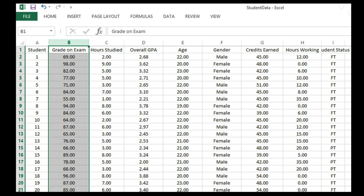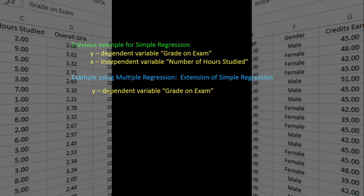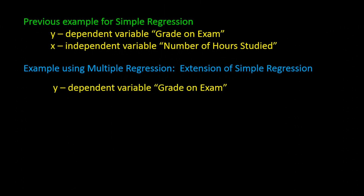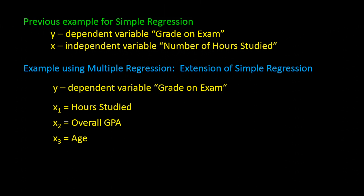I want to see if overall GPA and age are also related to grade on exam. So I have my dependent variable y as grades on exam, and now I will define my x variables. Let's define x1 as number of hours studied, x2 as overall grade point average, and x3 as age.